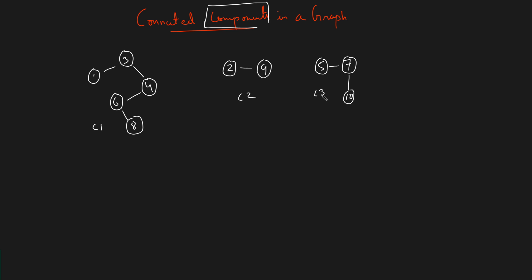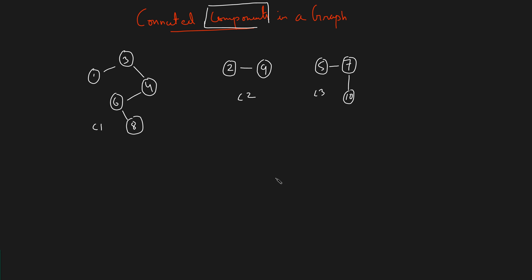Whenever you see a graph like this, never say it's three graphs — say it is a disconnected graph which has three different components. A graph can have one, two, three, or multiple components. Even if a graph has only single nodes, it's still a graph with multiple components, because even a single node can be called a component.